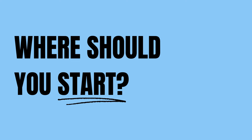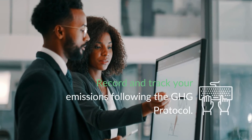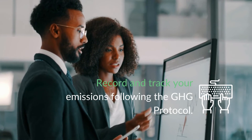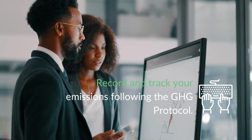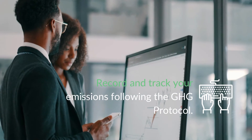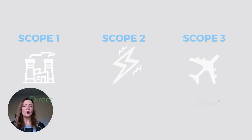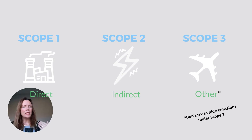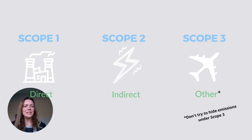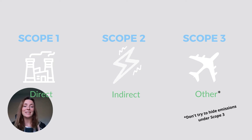So where should your business start? One tip from this video: start tracking your company's emissions today. Even if you're not planning to disclose this year or next, start tracking using the GHG or greenhouse gas protocol — they have a worksheet on their website you can access for free. Track Scope 1, 2, and 3. Don't try to hide emissions under Scope 3. For example, if your company owns delivery vehicles, selling them and outsourcing transportation is not necessarily making your company greener, so you should still count those emissions properly.